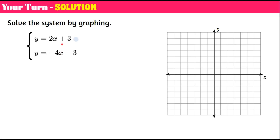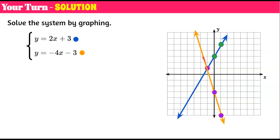Welcome back. Step one: graph each equation. The blue equation has a y-intercept of 3, so I plot that point and connect the points with a line. The orange equation has a y-intercept of negative 3. The slope is negative 4, so I can go down 4 and run positive 1, or rise 4 and run in the negative direction, and connect the line. The orange line falls left to right because of the negative slope; the blue line rises left to right because of the positive slope.